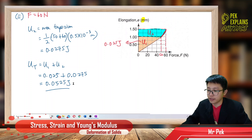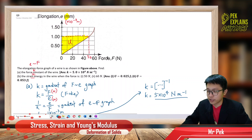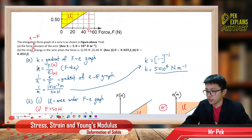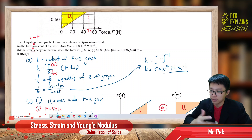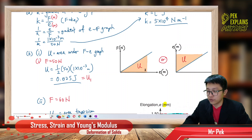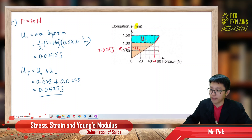So remember: to find the force constant, it's the gradient of the force elongation graph. But if you have the elongation force graph, invert K to get 1 over K, so it becomes E over F — the gradient of the E-F graph. Then invert back to get force constant K. For strain energy, it's the area under the force elongation graph; for the elongation force graph, the area is on the other side. Sometimes you need to use the trapezium formula.